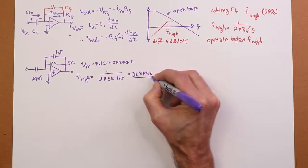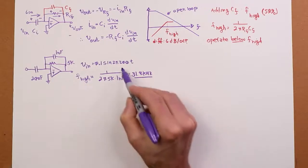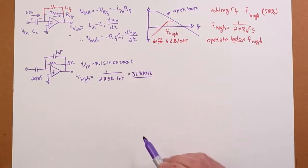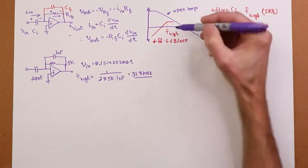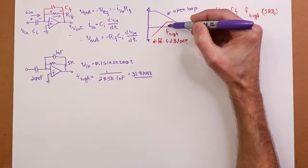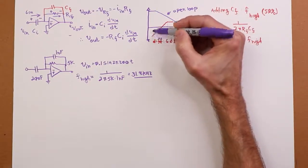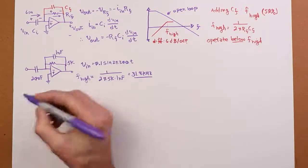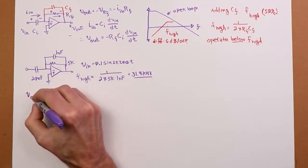So yeah, we are well below that with a 200 hertz input versus 31.8k. So here's our 31.8k over here. Our 200 hertz is way down here. So let's calculate, see what we got. What's the formula say?